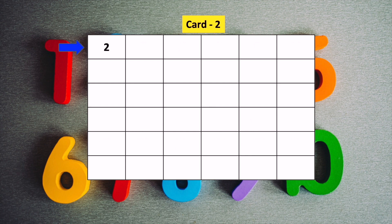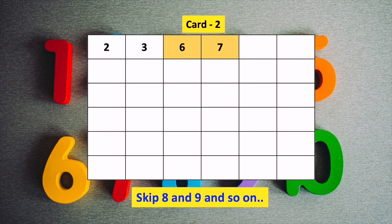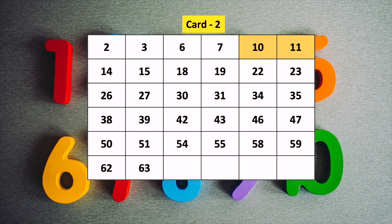For the second card, we start from number 2. This time, we will write 2 numbers and then skip next 2 numbers. So we write number 2 and 3, and then skip number 4 and 5. Then we will write 6, 7 and skip 8, 9. We continue like this till number 63.